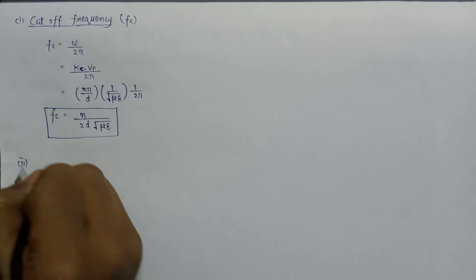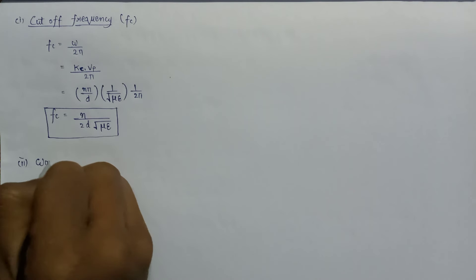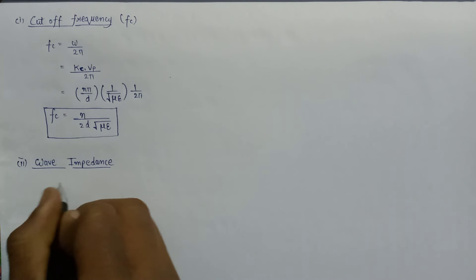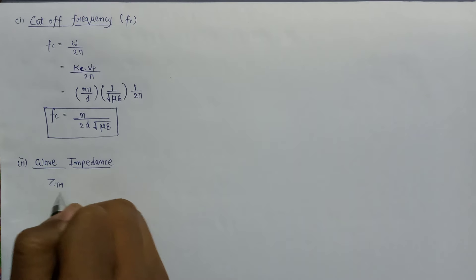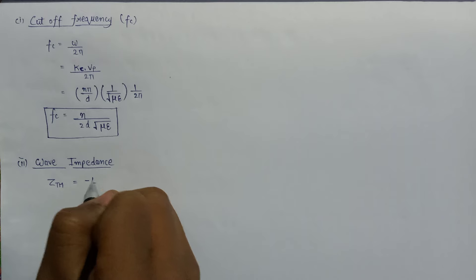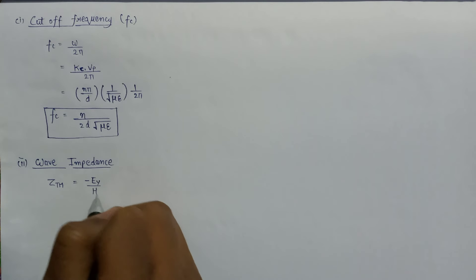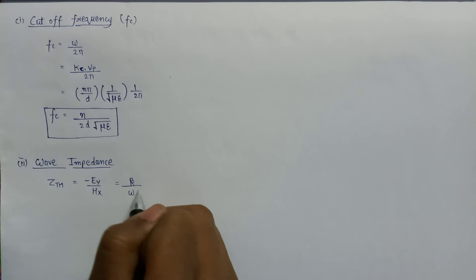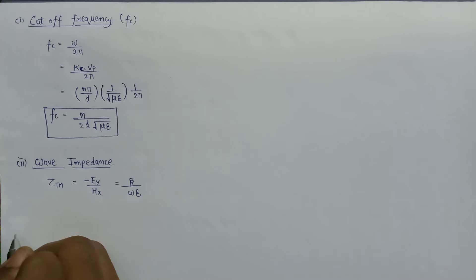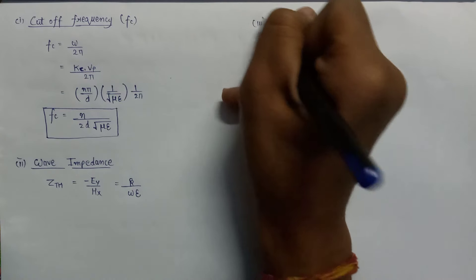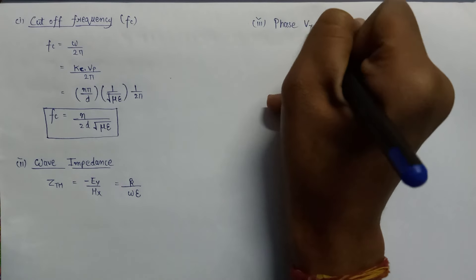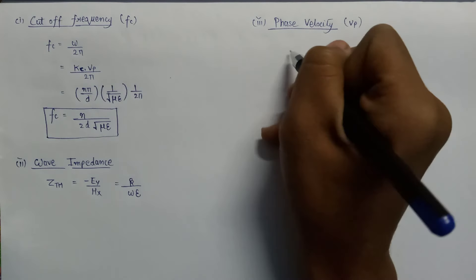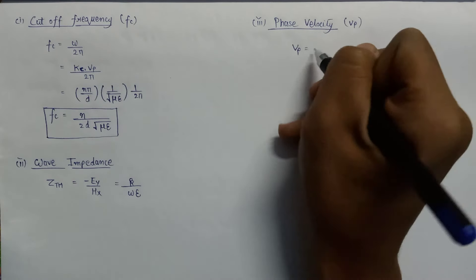The second parameter is the characteristic wave impedance for TM mode, represented by η_TM. Its expression is the negative ratio of ey over hx, which equals β over ωε. Moving on to the third parameter, which is phase velocity, represented by vp. The phase velocity expression is vp equals ω over β.